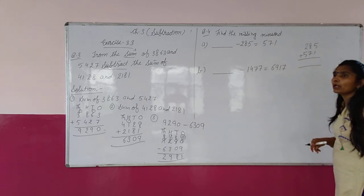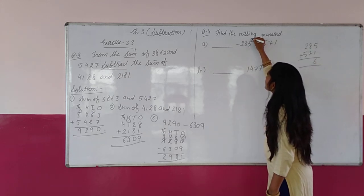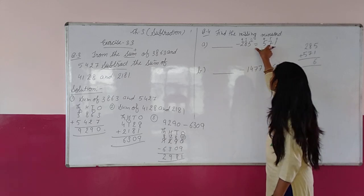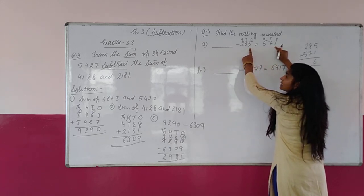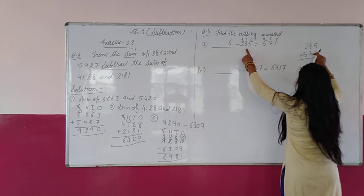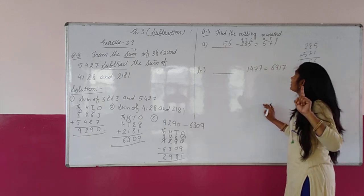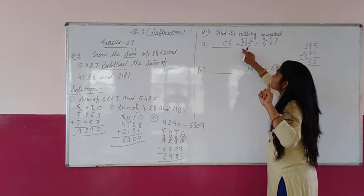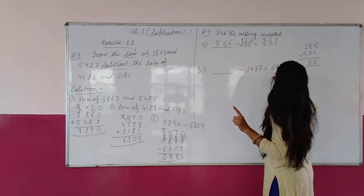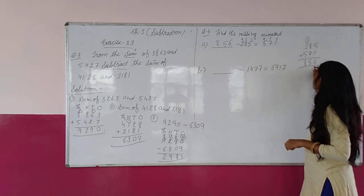285 plus 571: ones place में ones place add करो — 5 plus 1 = 6. Tens place: 8 plus 7 = 15, how much carry? 1. 5 plus 2 = 7, and 1 carry = 8. Hundreds: 5 plus 2 = 7, and 1 carry = 8. So the answer is 856. Same answer verified.